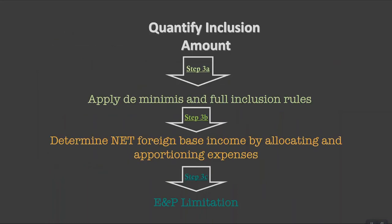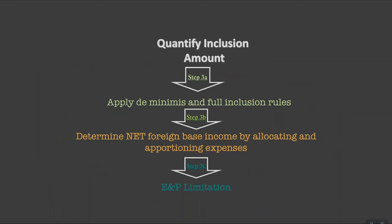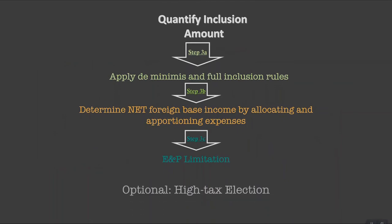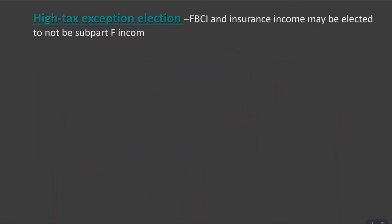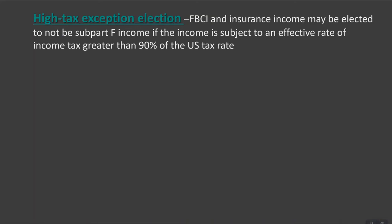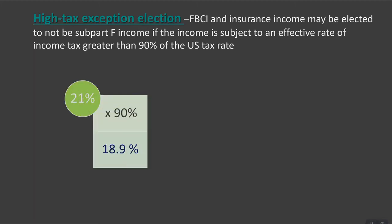Once net income by class is computed, the regulations provide an optional step known as the high tax exception. It is optional since a company can elect or not elect to apply the exception. If the exception is applied, generally the foreign-based company income and insurance income are not treated as subpart F income if the income at that CFC is subject to an effective rate of income tax imposed by a foreign country greater than 90% of the U.S. tax rate. In other words, if the income is earned in a jurisdiction with a relatively high tax rate like the U.S., it was probably not shifted there to reduce overall tax liability, so you are allowed to exclude that income. With the U.S. current tax rate of 21%, the effective rate of a foreign country needs to be 90% times 21%, or 18.9%.